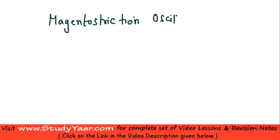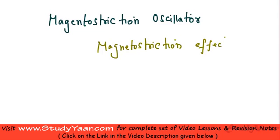The first method that we are going to analyze is known as a magnetostriction oscillator, which is basically based on magnetostriction effect. We are going to first learn what is the magnetostriction effect.